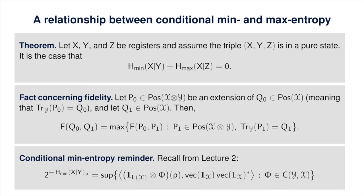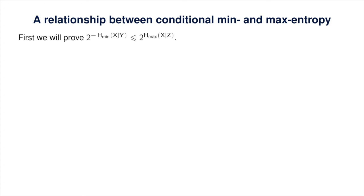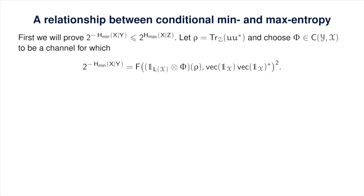Just as a reminder, recall from lecture 2 that the conditional min-entropy of x given y for state rho can be expressed as shown here. We're going to make use of this expression in the proof. Now, onto the proof. First, we'll prove that the conditional min-entropy of x given y plus the conditional max entropy of x given z is non-negative. We are assuming the state of the triple x, y, z is a pure state represented by a unit vector u. Using the characterization of the conditional min-entropy, let rho be the state of x, y obtained by tracing out z, and let phi be any channel achieving the maximum.